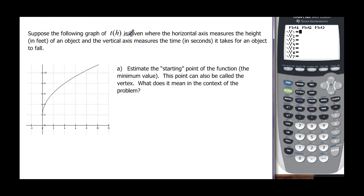Suppose the graph of T(h) is given where the horizontal axis, that's the x-axis, measures height in feet, and the vertical axis, that's the y, measures time in seconds for an object to fall. If we want to estimate the starting point, it looks like it starts somewhere about approximately (0, 2).